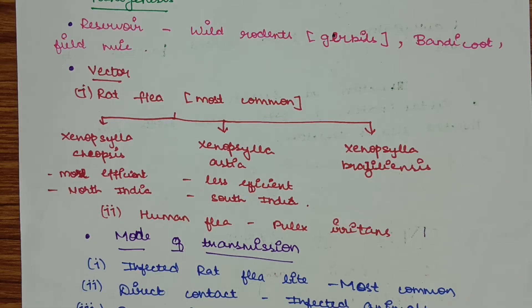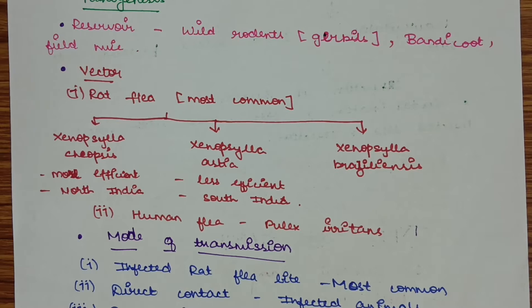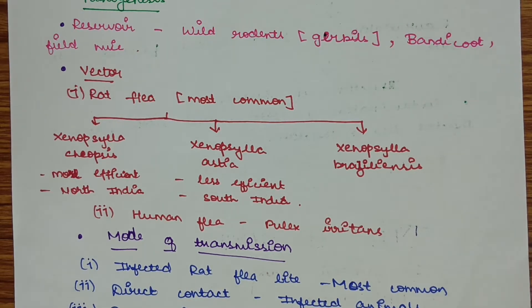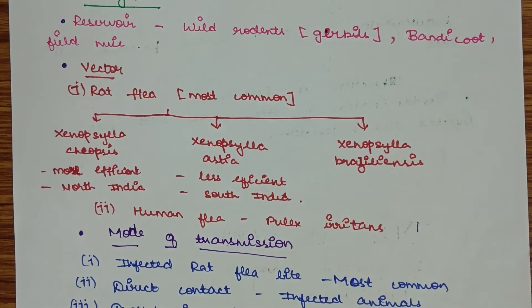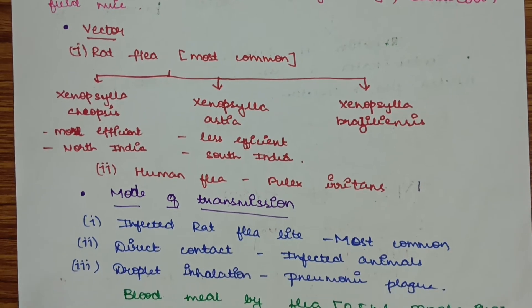Xenopsylla astia is less efficient and found in South India. Other vectors include the human flea, Pulex irritans, which is a less common vector. So the vectors include rat flea and human flea.